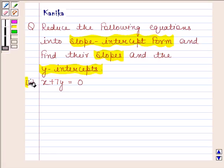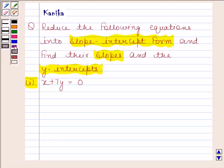First part is x plus 7y equals 0. Before solving this question, we should know that the equation of straight line in slope-intercept form